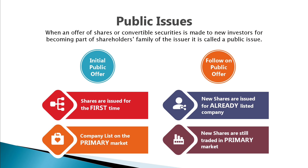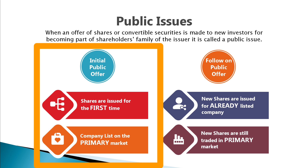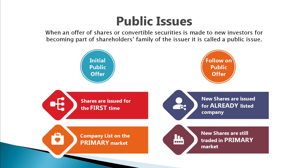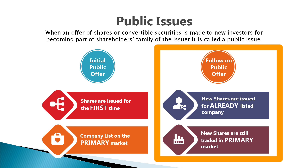As seen in the last video, an Initial Public Offering (IPO) is when a company issues common stocks or shares to the public for the first time in a primary market. If you are new to this tutorial, you may click the 'i' button to refer to our earlier video. A Further Public Offer (FPO) is a stock issue of additional shares made by a company that is already publicly listed and has gone through the IPO process.